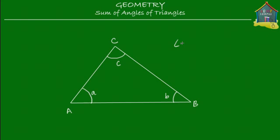the sum of these three angles, angle A plus angle B plus angle C is equal to 180 degrees.